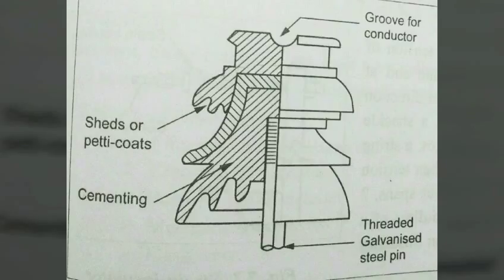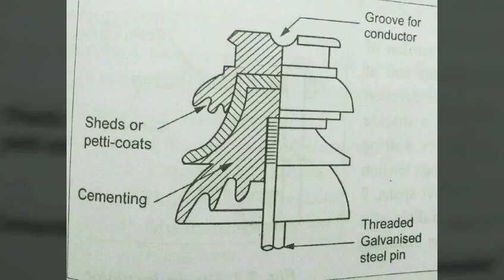These are so designed that even when the outer surface of the insulator is wet due to rain, sufficient leakage resistance is still provided by the inner dry surfaces. Pin type insulators are normally used for 11 kV, but can also be used up to 33 kV for transmission and distribution. It is not desirable to use them above 50 kV as cost becomes more.